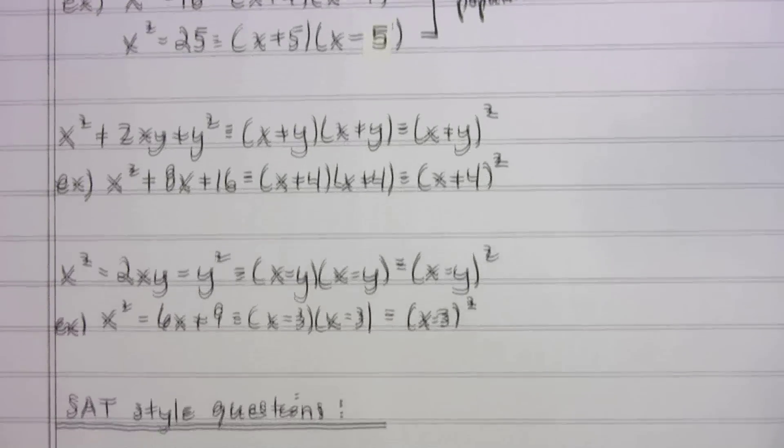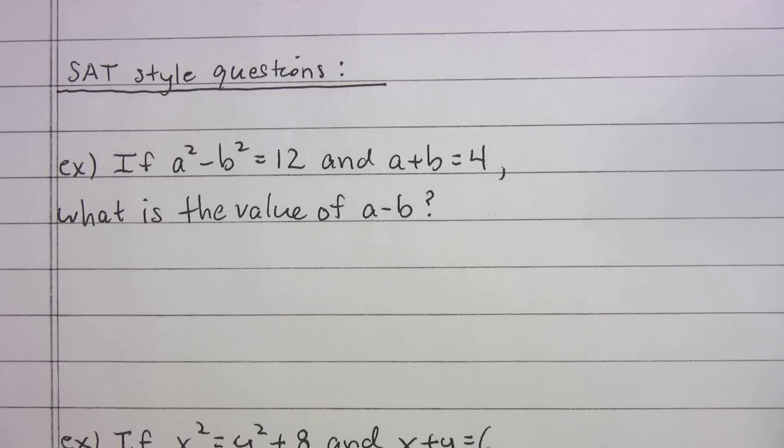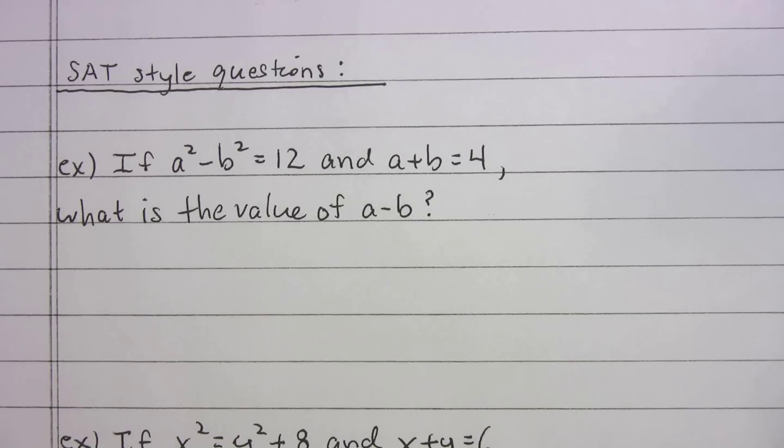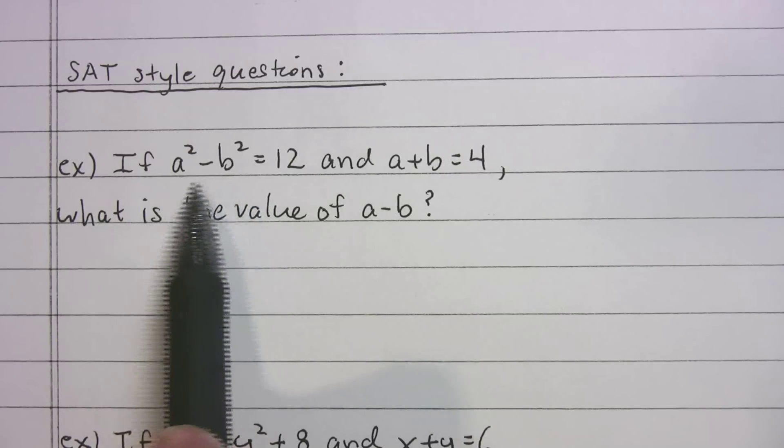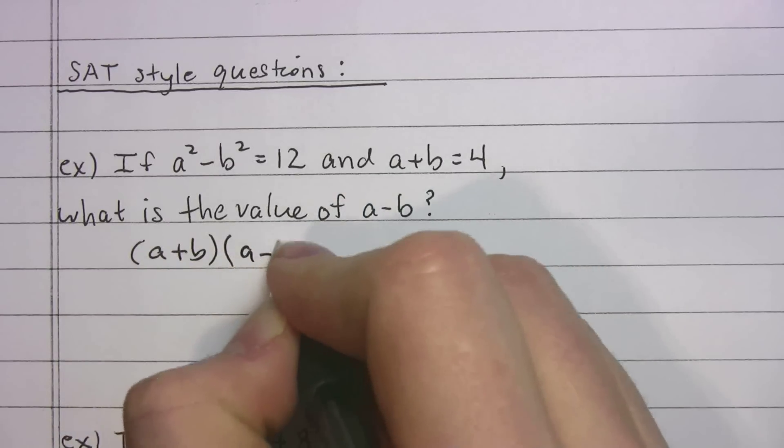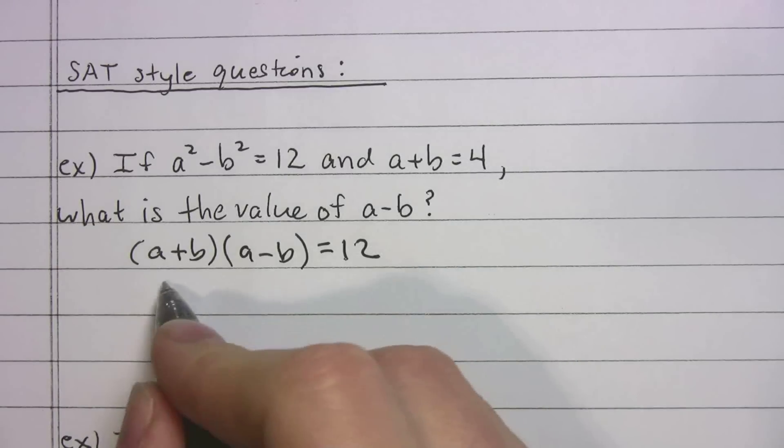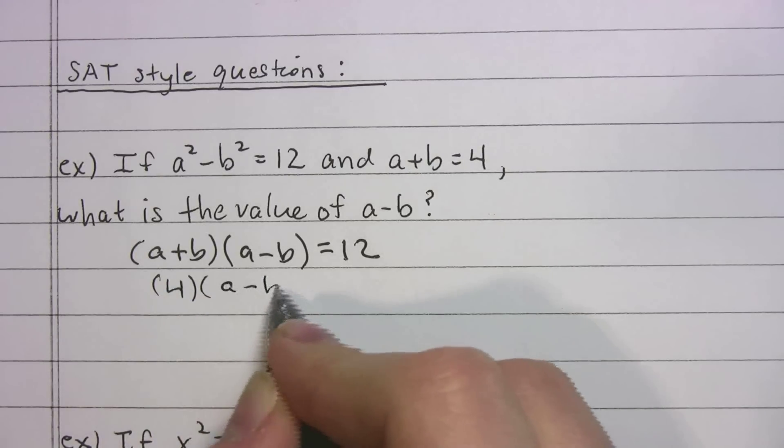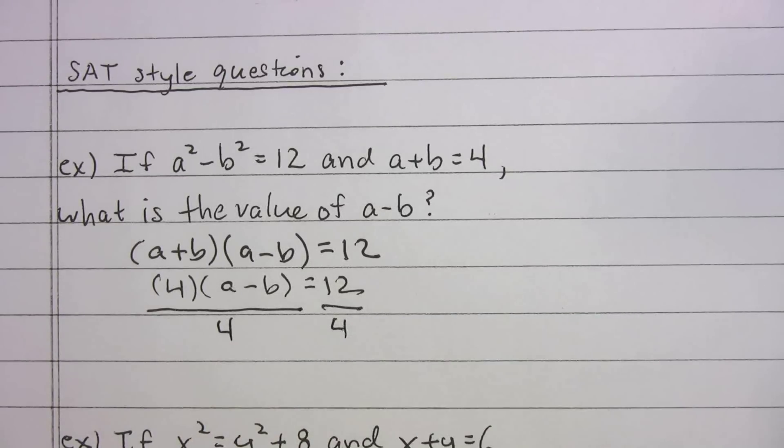Let's do some examples to see if any of this is kicking in. I put some SAT style questions here. If a squared minus b squared equals 12, and a plus b equals 4, what is the value of a minus b? We should recognize that a squared minus b squared will factor into a plus b times a minus b. The whole thing is equal to 12. They told us that a plus b is 4. I'll pop that in and we can solve rather quickly. a minus b equals 3.